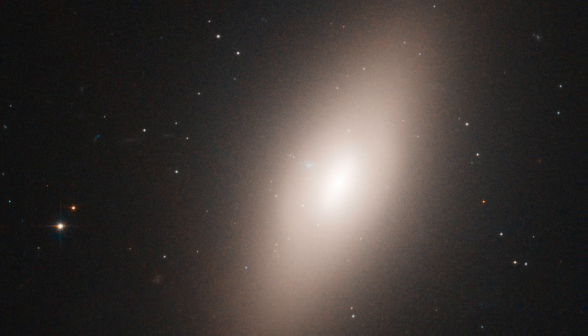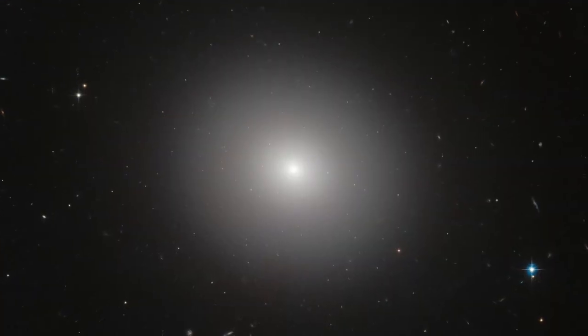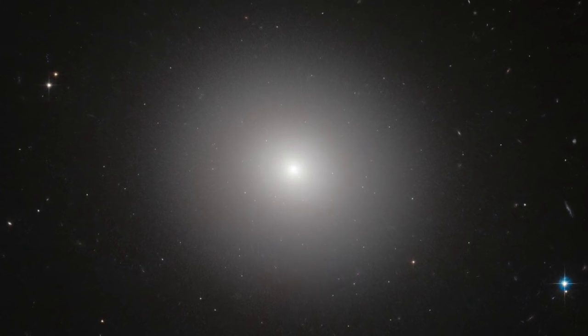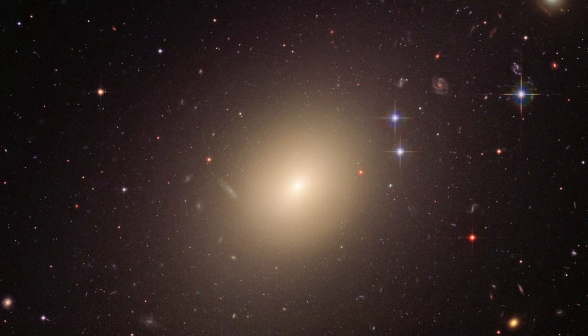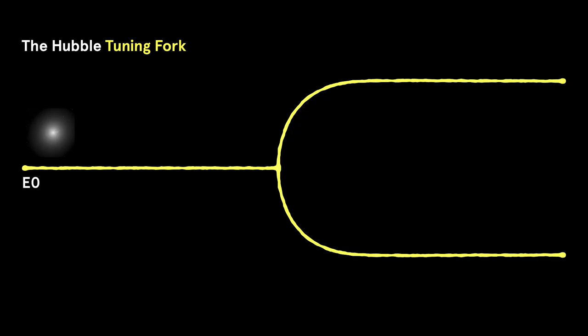Elliptical galaxies have a smooth spheroidal appearance with little internal structure. They're dominated by a spheroidal bulge and have no obvious thin disk. Elliptical galaxies are divided into subclasses based on their apparent flattening. E0 galaxies are circular, through to E7 galaxies, which are highly elongated.